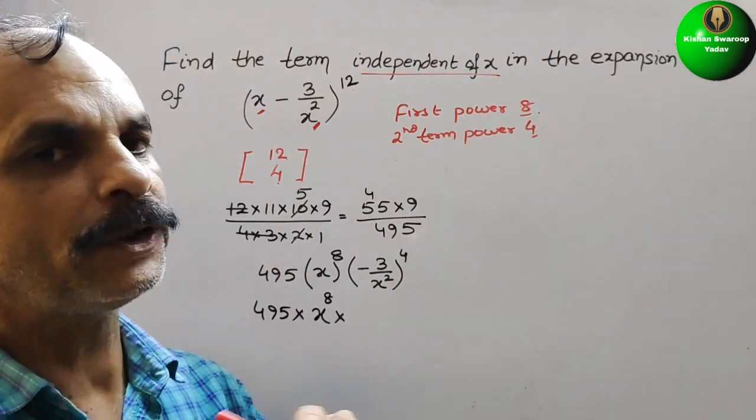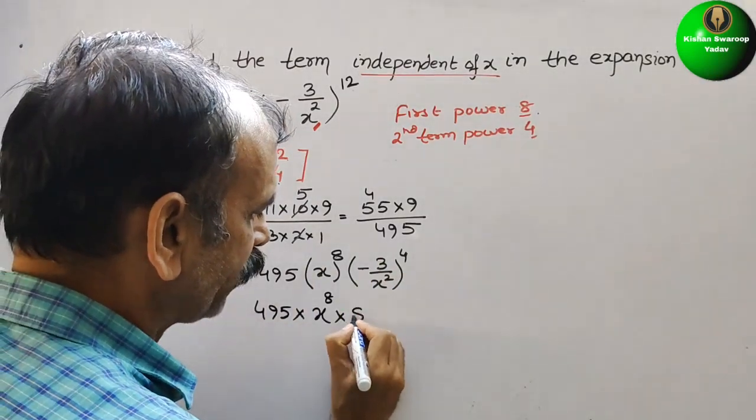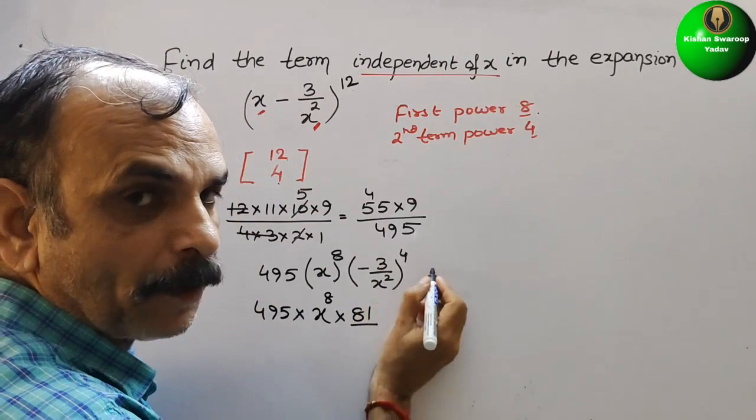So here 3 to the power of 4, so that means 3 into 3 is 9, 9 into 9 is 81. So here you will get 81.